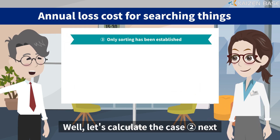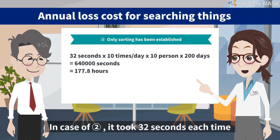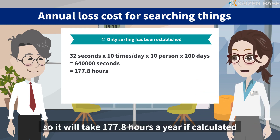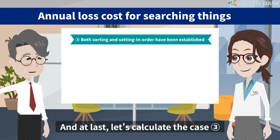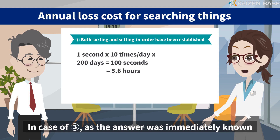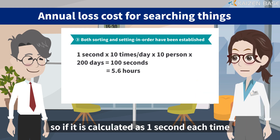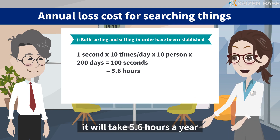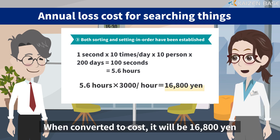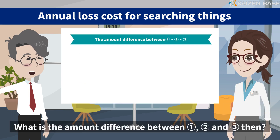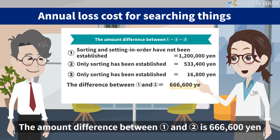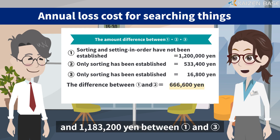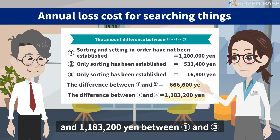Let's calculate case two next. In case two, it took 32 seconds each time, so it will take 177.8 hours a year. When converted to cost, it will be 533,400 yen. In case three, as the answer was immediately known, if calculated as one second each time, it will take 5.6 hours a year. When converted to cost, it will be 16,800 yen. The amount difference between case 1 and 2 is 666,600 yen, and 1,183,200 yen between case 1 and 3.